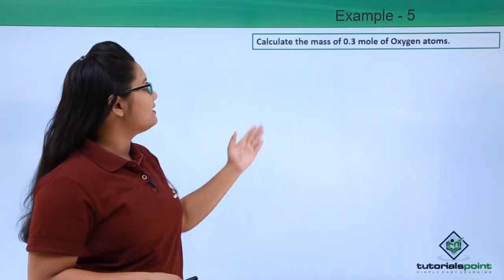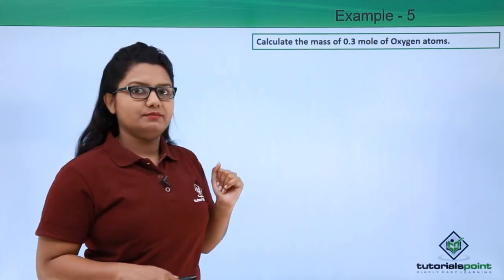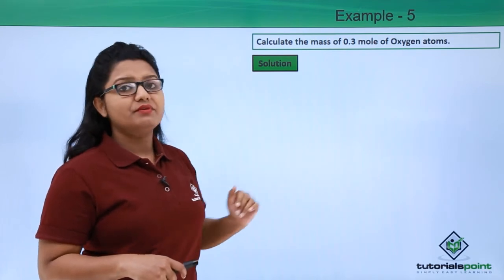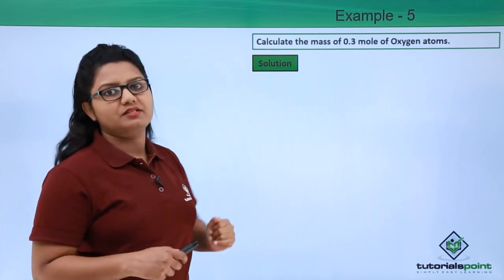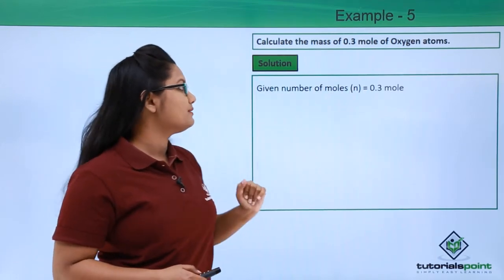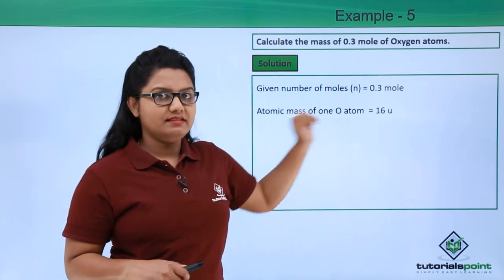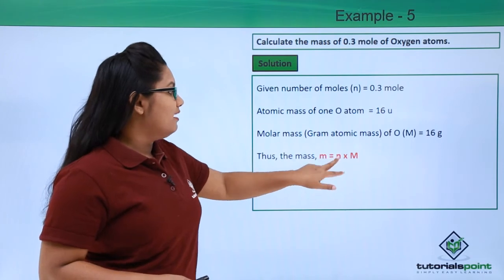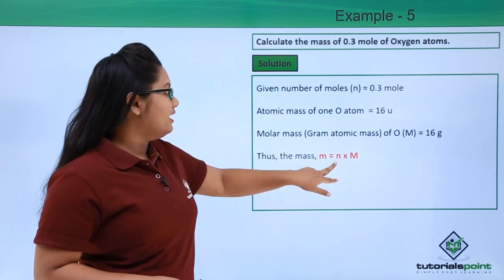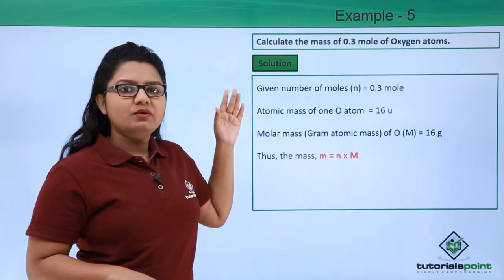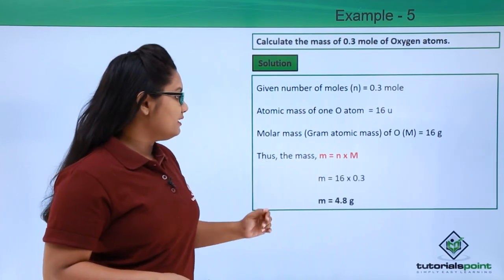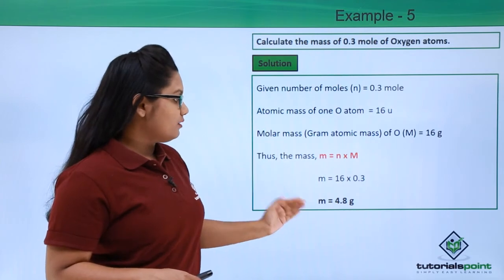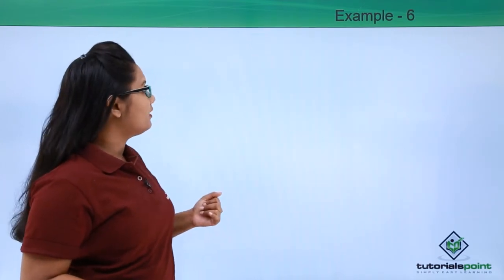Problem 5: Calculate the mass of 0.3 moles of oxygen atoms. Since the number of moles is given, we use Formula 1. n = 0.3 mol; the atomic mass of oxygen is 16 u, so molar mass M = 16 g. Using m = n × M = 0.3 × 16 = 4.8 grams. So 0.3 moles of oxygen atoms has a mass of 4.8 grams.